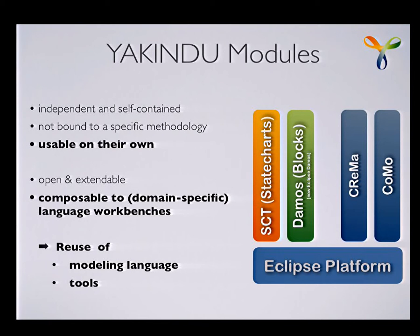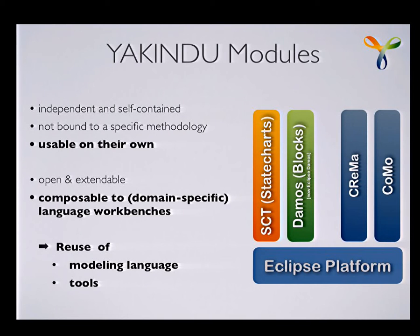The basic idea is that they are also open and extendable, so you can easily extend and customize them. There are two modules I want to emphasize today: the state chart tools, and Darmus, which is a modeling tool for block-oriented modeling for dynamic systems and has already become an Eclipse project.